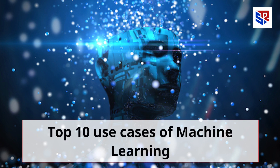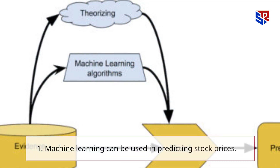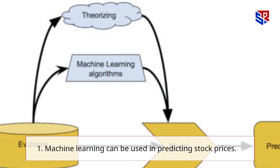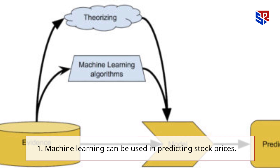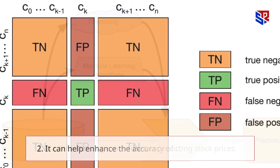Top 10 Use Cases of Machine Learning. 1. Machine learning can be used in predicting stock prices.